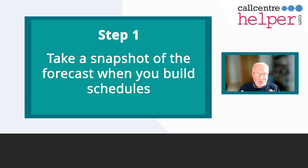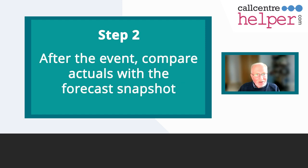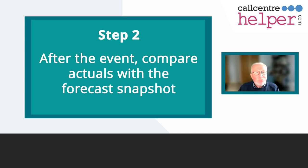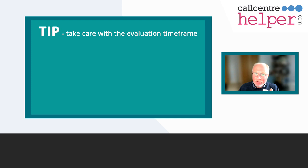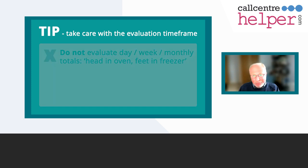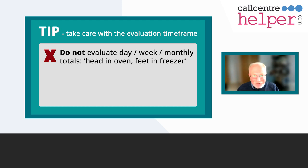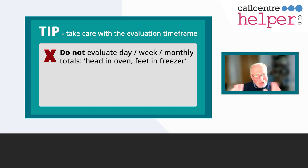A good workforce management application will have the ability to do that — in Jixo it's called forecast versions. The second step is after the event: the days and weeks have arrived, and you want to compare the actuals with what you saved in the forecast snapshot. The tip here is to be careful in choosing the evaluation time frame. Averages are dangerous — if I put my head in the oven and my feet in the freezer, on average I'm comfortable, but it doesn't work out like that.